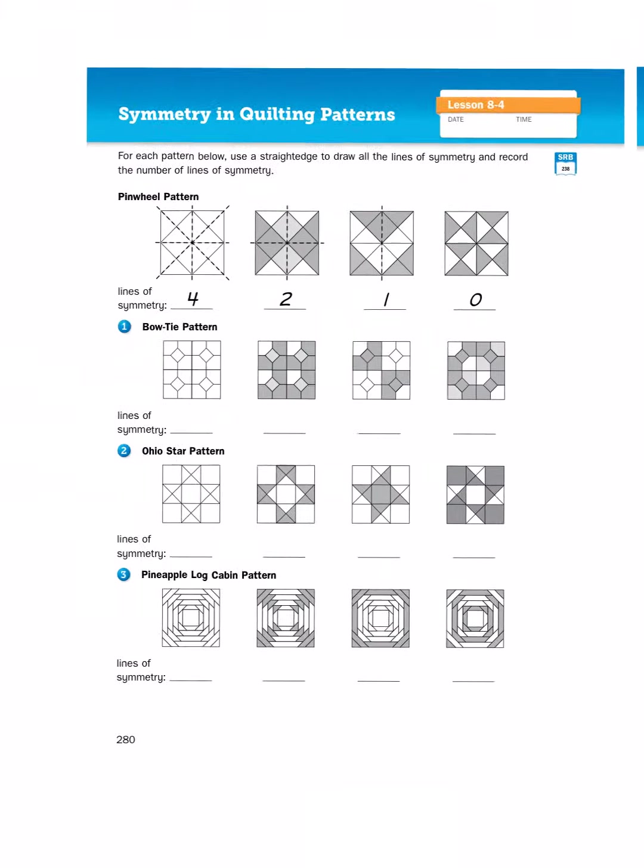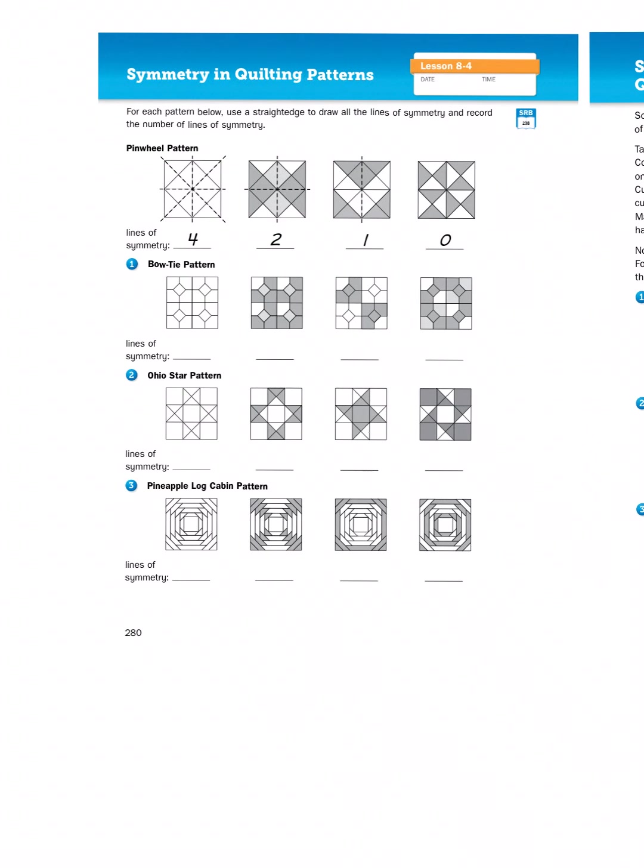Now, as you can see on page 280, I have a number of different types of quilt patterns. If you're not familiar with what a quilt is, it's like a blanket that is stitched together with a number of scraps of cloth, sometimes deliberately to make intricate patterns and sometimes just whatever you have left over. Here we have some specific patterns that look deliberate. And the question is, how many lines of symmetry do these quilting patterns contain?